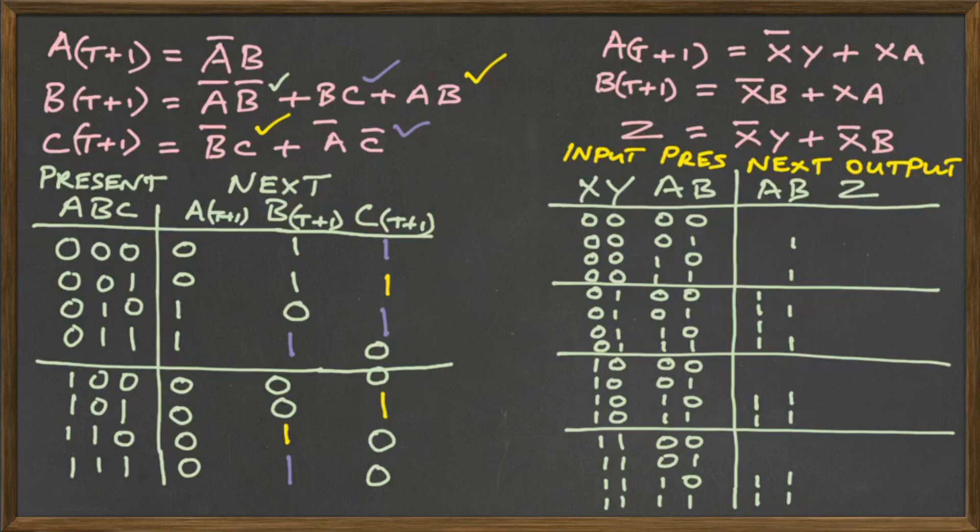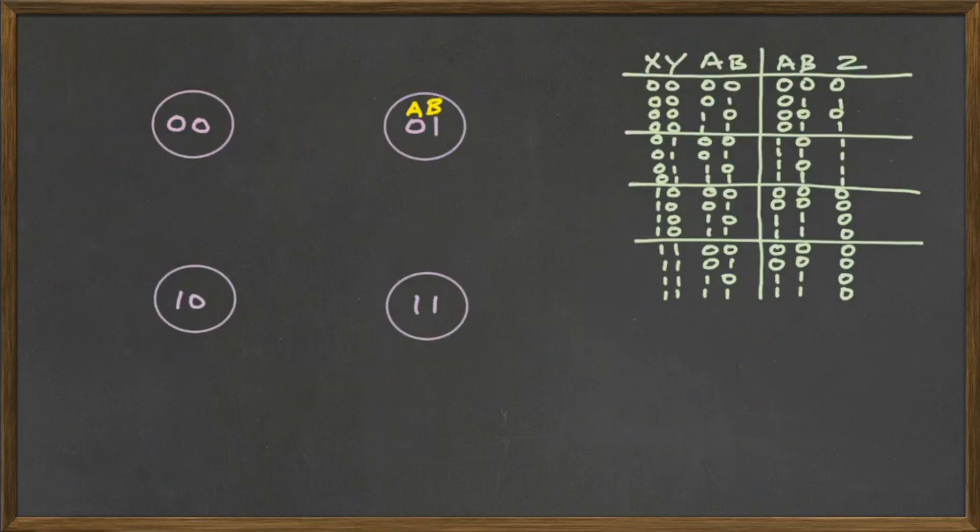For the Z, we have the X bar Y term, which puts those, and the X bar B term, which puts those extra two ones as shown. So now we have to fill in the zeros. And we have our two state tables and we're ready to go to the state diagram.